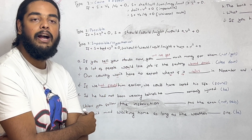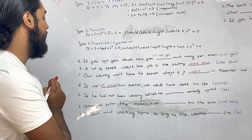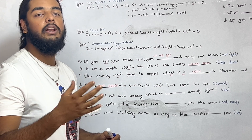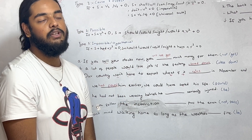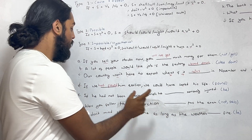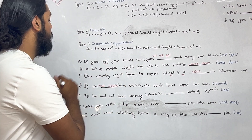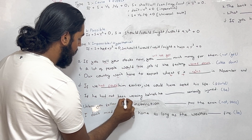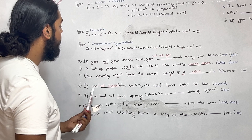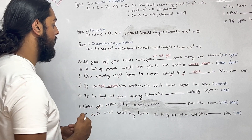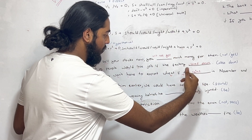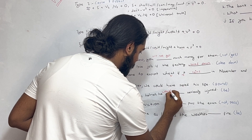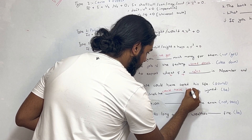Impossible or hypothetical here — he is dead now, so we could have saved his life — this is not possible. Exercise E: If he had not been wearing a helmet, he could have been injured — he would have been injured.